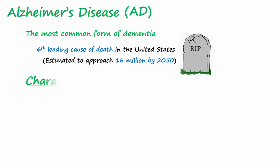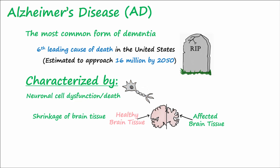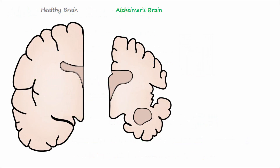Alzheimer's disease is characterized by neuronal cell dysfunction and death, as well as shrinkage of brain tissue. This neurodegeneration leads to progressive cognitive, behavioral, and motor impairment and ultimately death. The disease process of AD is associated with the accumulation of senile plaques and neurofibrillary tangles in the brain.